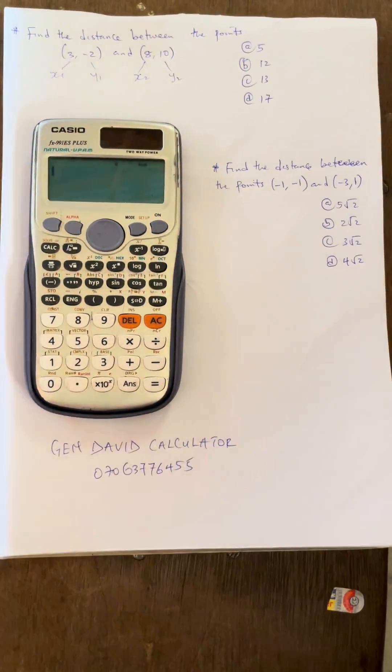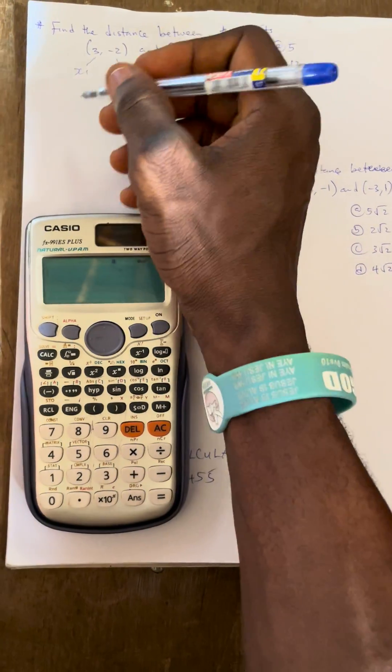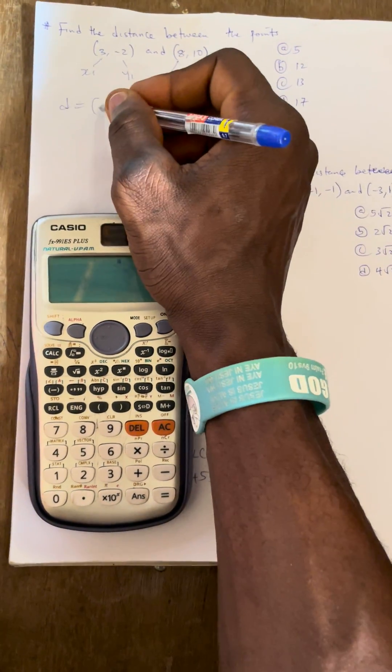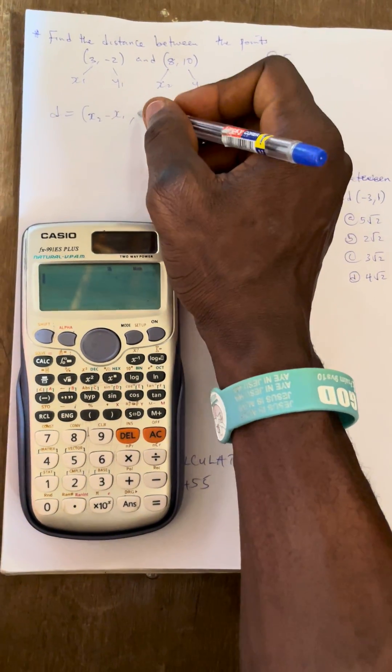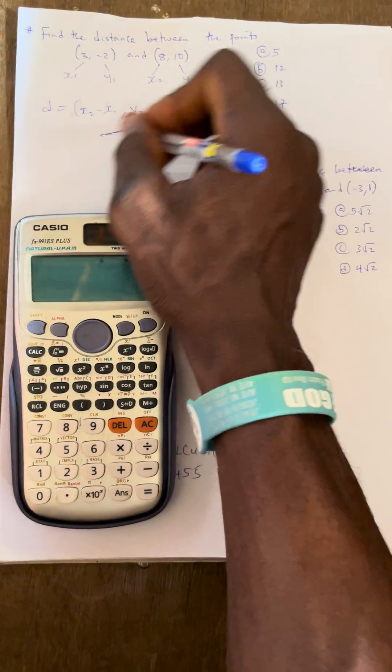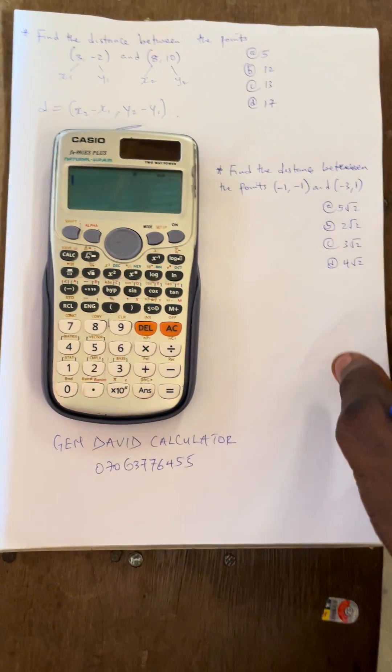If you check this very well, you will observe the calculator shortcut is that your distance equals to, you have your x2 minus your x1, then comma, you have your y2 minus your y1. This is the formula we are going to follow using the calculator method.